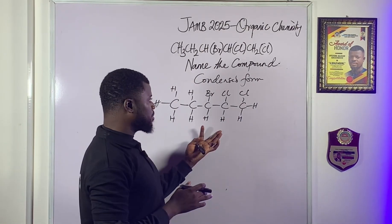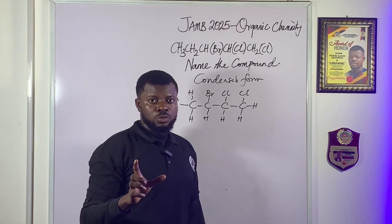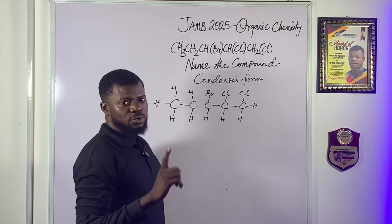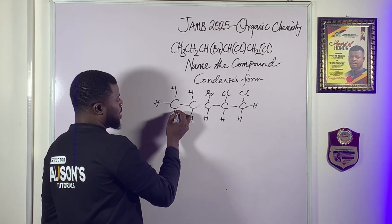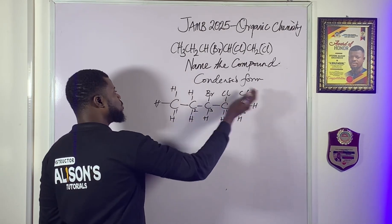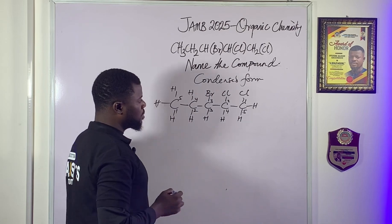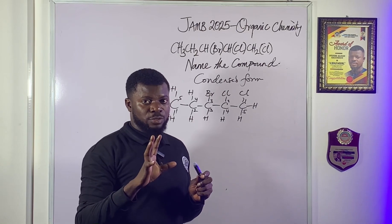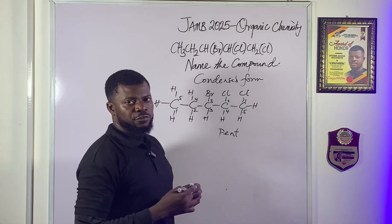This is the same structure as this — they are the same, only that this is in its condensed form; I just expanded it. Now let's name this compound. The first rule in naming organic compounds is that you need to count the longest continuous carbon chain. In this case, starting from here: first carbon, second, third, fourth, fifth carbon.